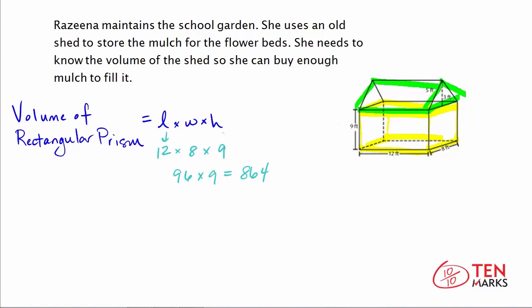Don't forget your units. The measurements are given in feet, and since we're finding volume by multiplying three dimensions, the unit is feet cubed. So the volume of the rectangular prism is 864 feet cubed.